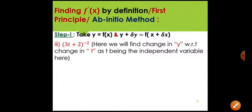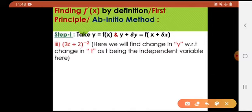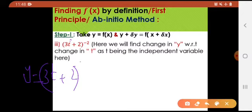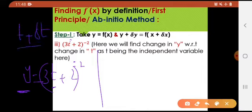Now step 1. Again, this is exactly the same four steps — everything is the same except for the variable. I have chosen the question with t. Step 1: let y equal the given function. Now what do we have to do? We have to replace y with y plus delta y and we have to replace t — since this time we have t — with t plus delta t, meaning change in t.